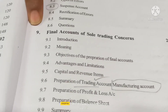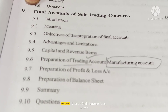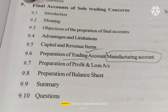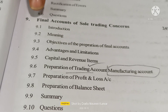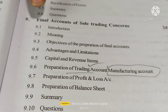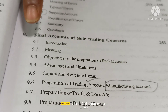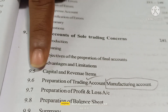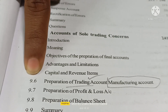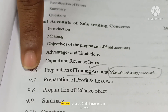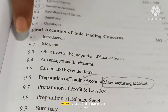The ninth chapter is Final Accounts of Sole Trading Concern. In this: introduction, meaning, objectives and advantages and limitations, capital and revenue items, preparation of Trading Account, Trading Profit and Loss Account, Manufacturing Account, preparation of Profit and Loss Account, and preparation of Balance Sheet. In these topics we are going to see problems.